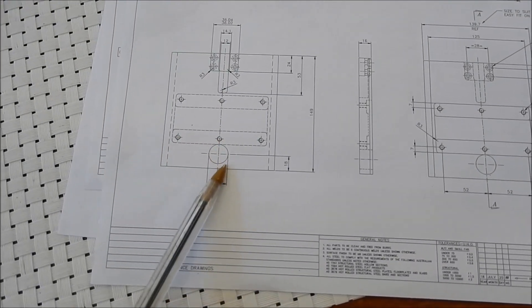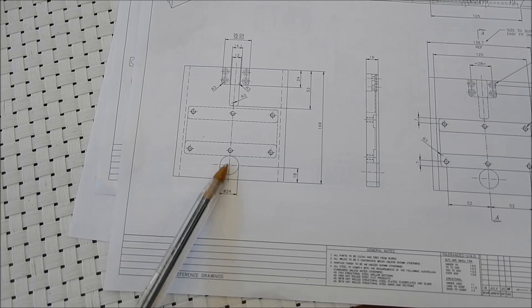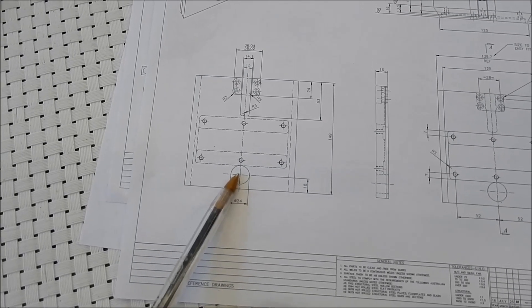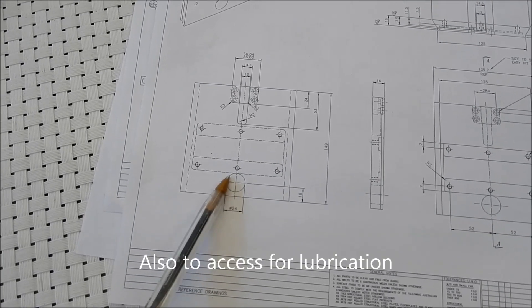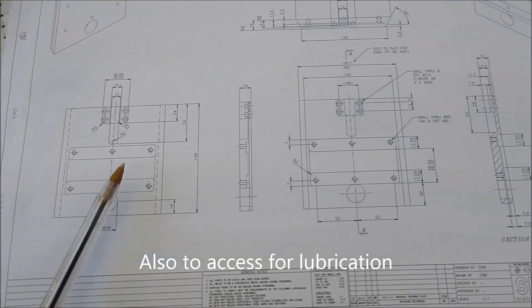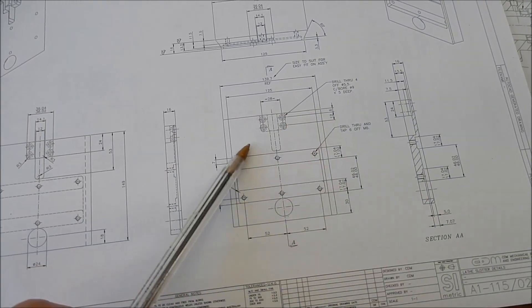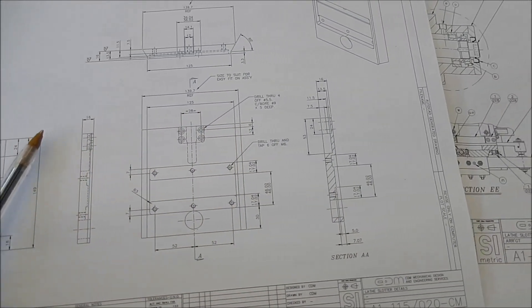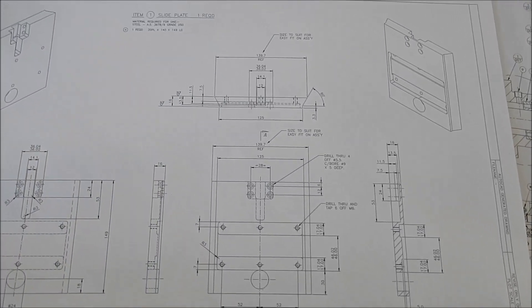We've also got a small bore that we've got to do in here and that's to access the crank pin that we can take out and then reposition for a different stroke. A little bit of drilling and tapping and some drilling and counterboring to happen so there's a little bit in this.